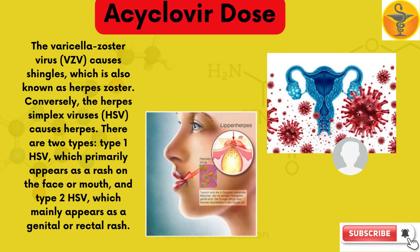The varicella-zoster virus causes shingles, which is also known as herpes zoster. Conversely, the herpes simplex virus causes herpes. There are two types: Type 1 HSV, which primarily appears as a rash on the face or mouth, and Type 2 HSV, which mainly appears as a genital or rectal rash.